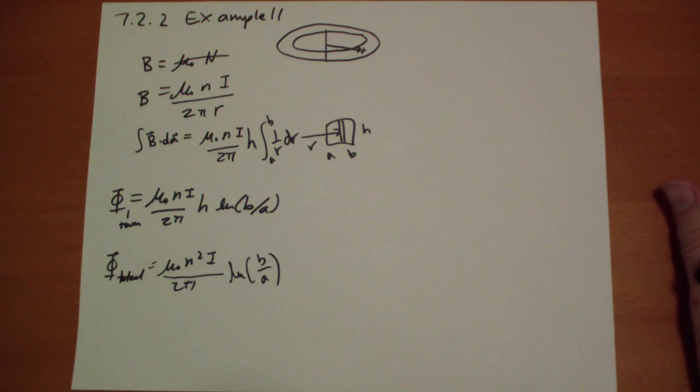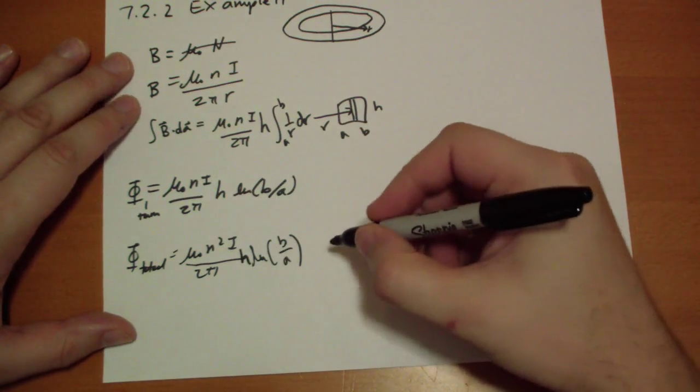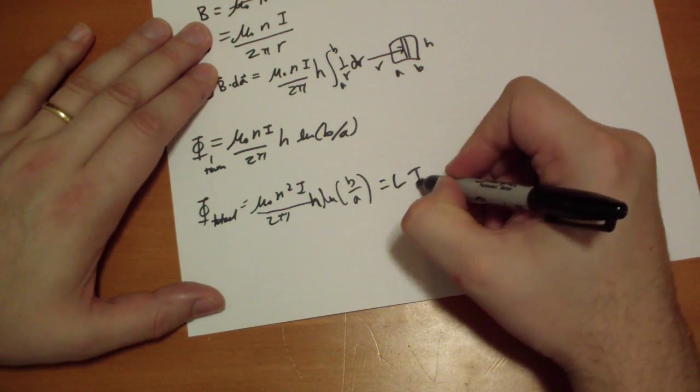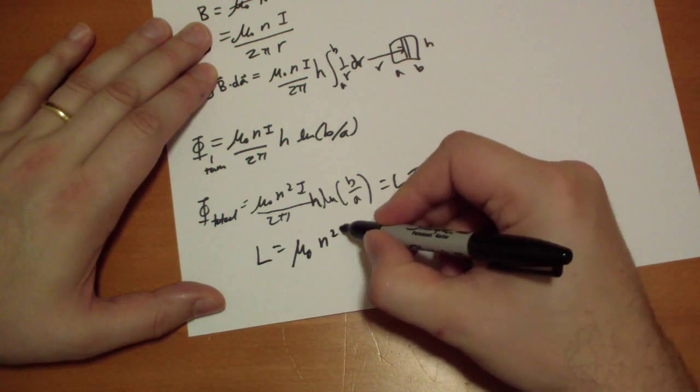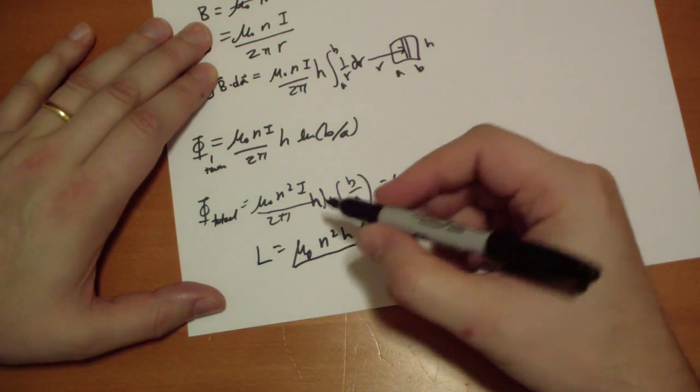Okay, and that's, so the self-inductance L, where'd my h go? Self-inductance is whatever times i you get left over, so it's going to equal Li. So L is equal to mu naught n squared h log of b over a, all over 2 pi.